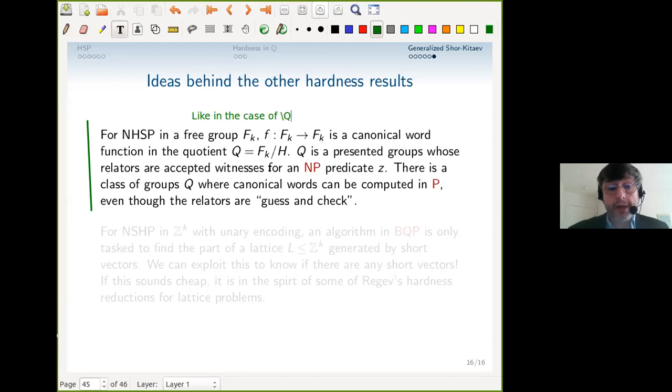Since H is normal, there's a quotient group Q, and this canonical representatives business amounts to canonical words in Q. Q being formed from this hidden subgroup means that Q is a presented group whose relators are accepted witnesses. You can set it up that way, just like in the case of Q. The accepted witnesses—the relators of this group—are behind a curtain. You can guess and check, but still somehow you're supposed to solve the word problem in Q. The truth is, there is a class of groups where you can do that. It's related to what's called small cancellation theory in combinatorial group theory, and it's its own topic that goes back to the 60s.